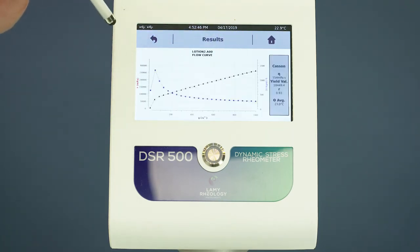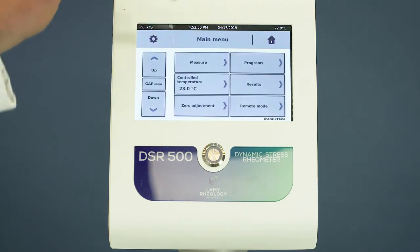As you can see, a measurement with DSR 500 CP 4000 is so easy.